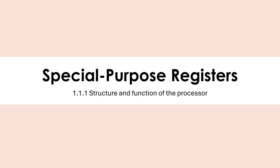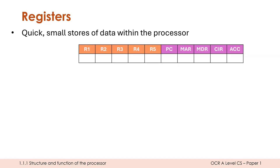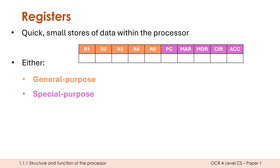We're going to pay a bit more attention to registers in this video and look at the special purpose registers which are inside the CPU. A register is a very quick, very small store of data held within your processor. You don't have many of these — definitely less than 100 in total, possibly quite a lot less. They are tiny, holding only a few bits, maybe a maximum of 64 bits. Registers are either general purpose or special purpose registers.